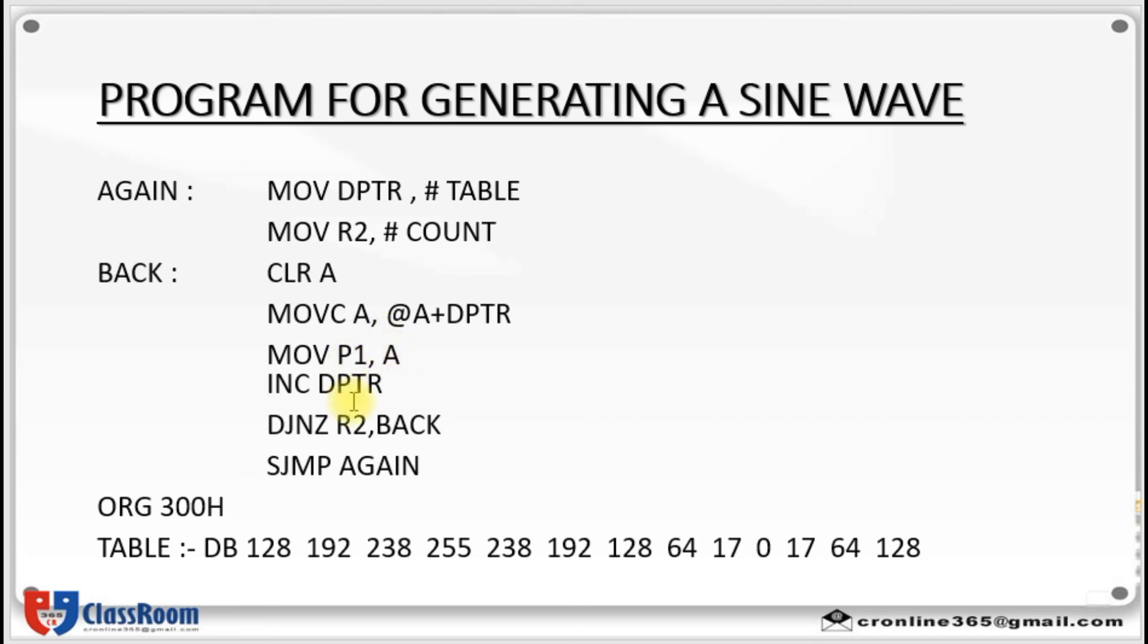Then you have to increment dptr. That is 300h becomes 301. At the same time you have to decrement your count value. If your count value is 13, you have to decrement it to 12. Then you follow the jump again. You move dptr to 301. Count is decremented to 12. Then clear accumulator. Accumulator value is cleared. Then 0 plus 301 will be pointing this value. That value is moved to accumulator. At the same time it is moved to port 1. Then the process repeats.